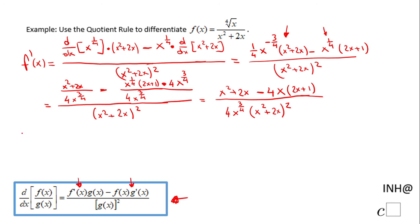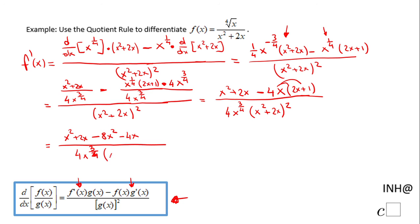And we can do more simplification. We have x squared plus 2x minus 8x squared — distributive property here — minus 4x, over 4x to the 3 fourths times x squared plus 2x squared. And the last thing here will be to simplify the numerator, and that will be negative 7x squared minus 2x over 4 times x to the 3 fourths times the quantity x squared plus 2x squared.